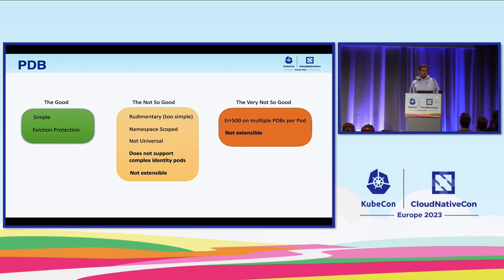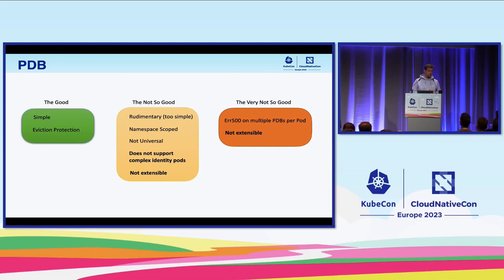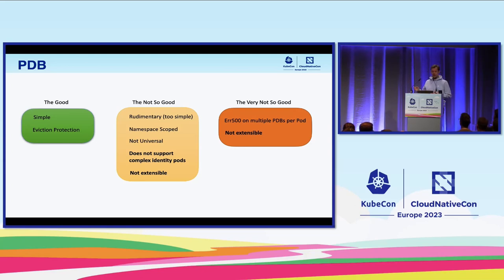PDBs are not universally supported — kubelet and taint manager ignore them. For example, if kubelet dies on a node and that node is marked not-ready, a no-execute taint gets applied. Taint manager wakes up and deletes all pods that don't tolerate that taint. One of those pods could be mine with a disruption policy, but that policy isn't consulted. What I'd want is for taint manager to wait until replacement pods come up on other nodes — but that won't happen today. Taint manager will simply remove pods and potentially cause an outage.